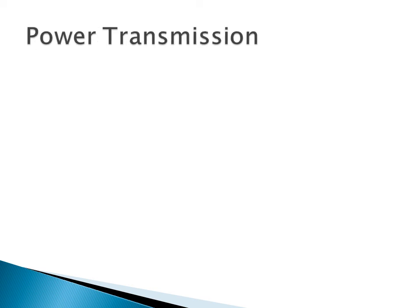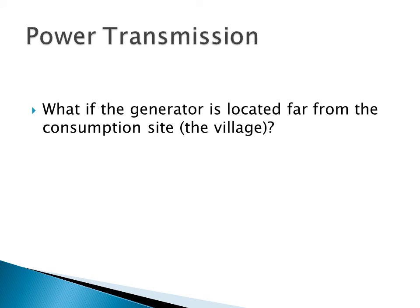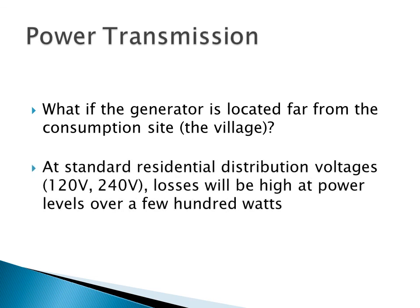For those of you who have taken power courses, you'll be familiar with the problem of transmitting power over larger distances. In this case, where you have a rural village, it's quite likely that the generator could be located far enough away from the village that the losses will be considerable. If you were to use a regular distribution voltage of 120 or 240, the losses will become basically unacceptable at power levels over a few hundred watts.